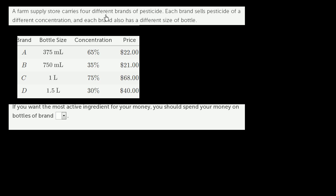A farm supply store carries four different brands of pesticide. Each brand sells pesticide of a different concentration, and each brand also has a different size of bottle. So here we have the different brands. They give us the bottle size, the concentration—that's the percentage of this fluid volume that is actually pesticide, that's actually active ingredient—and then they tell us the price per bottle.